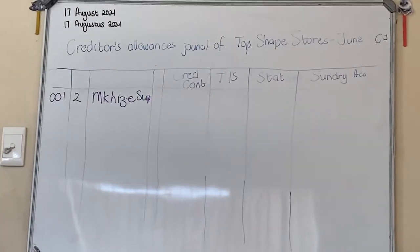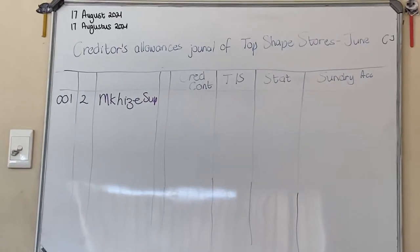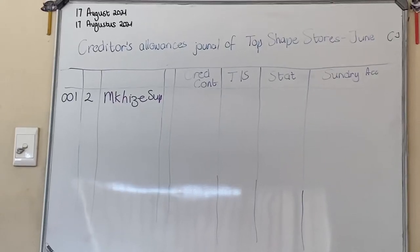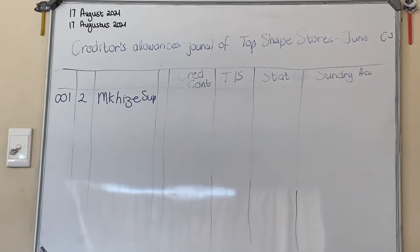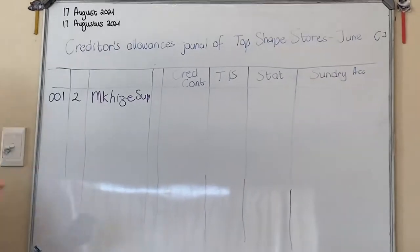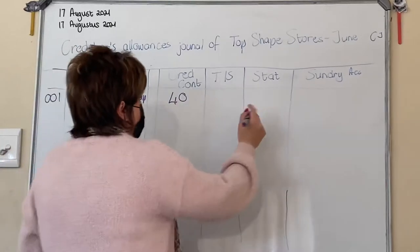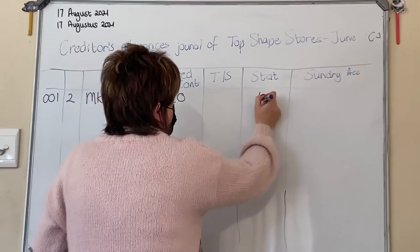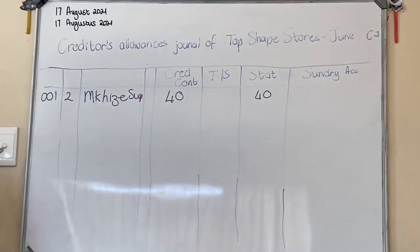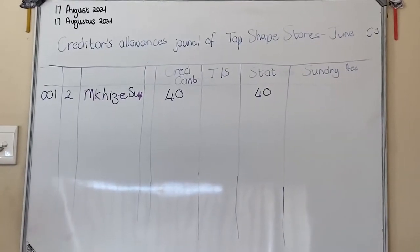The details: there was 180 rands worth of incorrect stationery that we bought, but only 40 rands worth was returned. So in your creditors control column put 40 rand. This is stationery I'm returning, so it goes into my stationery column to indicate that's what I've returned.